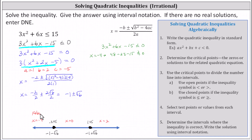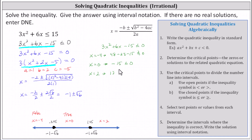Testing x equals zero: we have zero plus zero minus 15 less than or equal to zero, which is true. We mark the middle interval as true. Testing x equals two: the square of two is four, three times four is 12, plus six times two is plus 12, minus 15 — this result is positive, which is not less than or equal to zero. We mark the right interval as false.